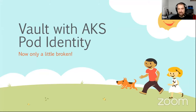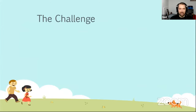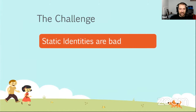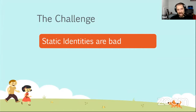So what is Pod Identity and what does it have to do with Vault? The challenge here is that static identities in general are bad. We don't like those anymore, and that's kind of the promise of what Vault can do — it can dynamically generate a token or an identity for you, and then when the lease is ended or you need to revoke it, that identity goes away. You're not storing static usernames and passwords.